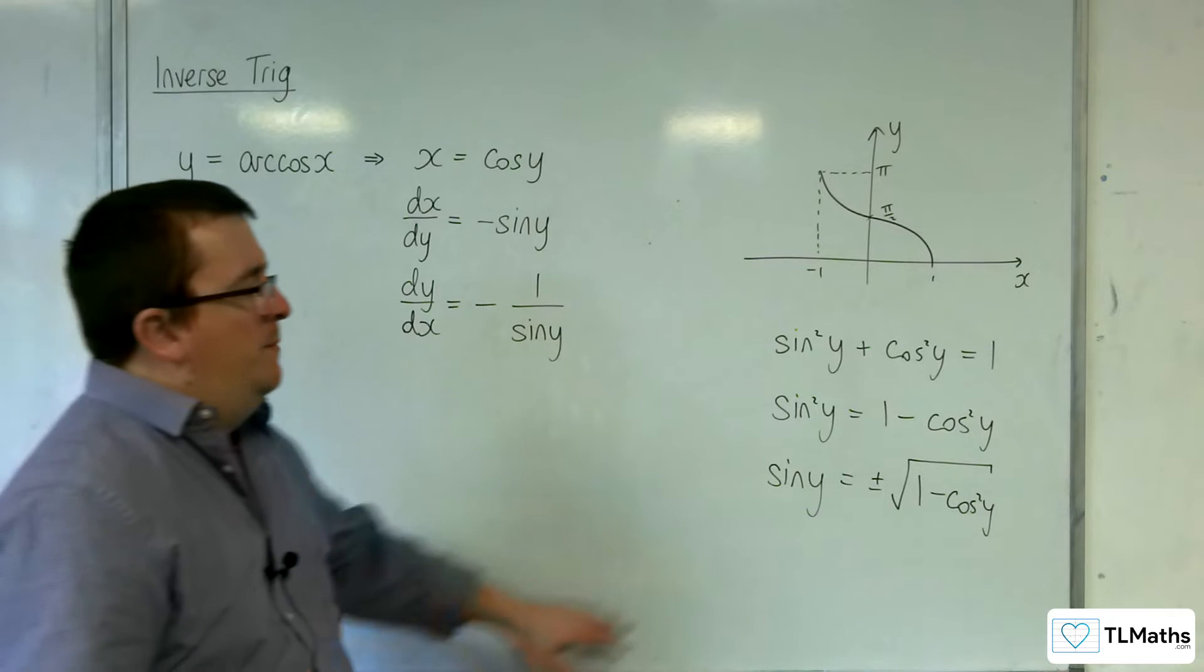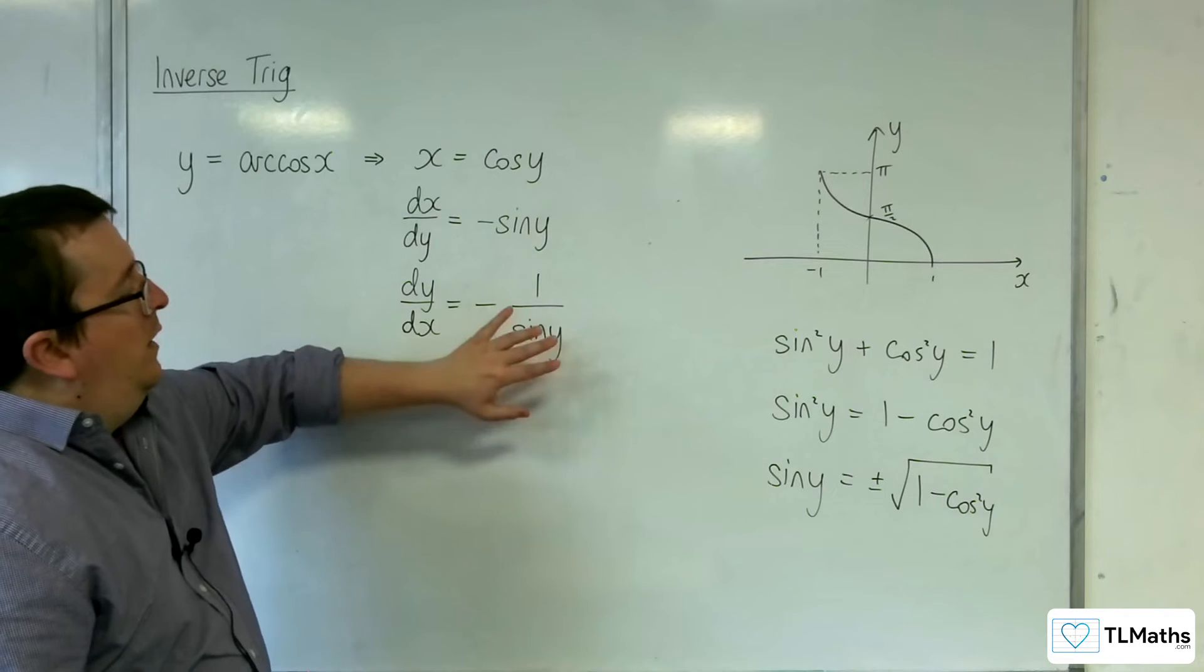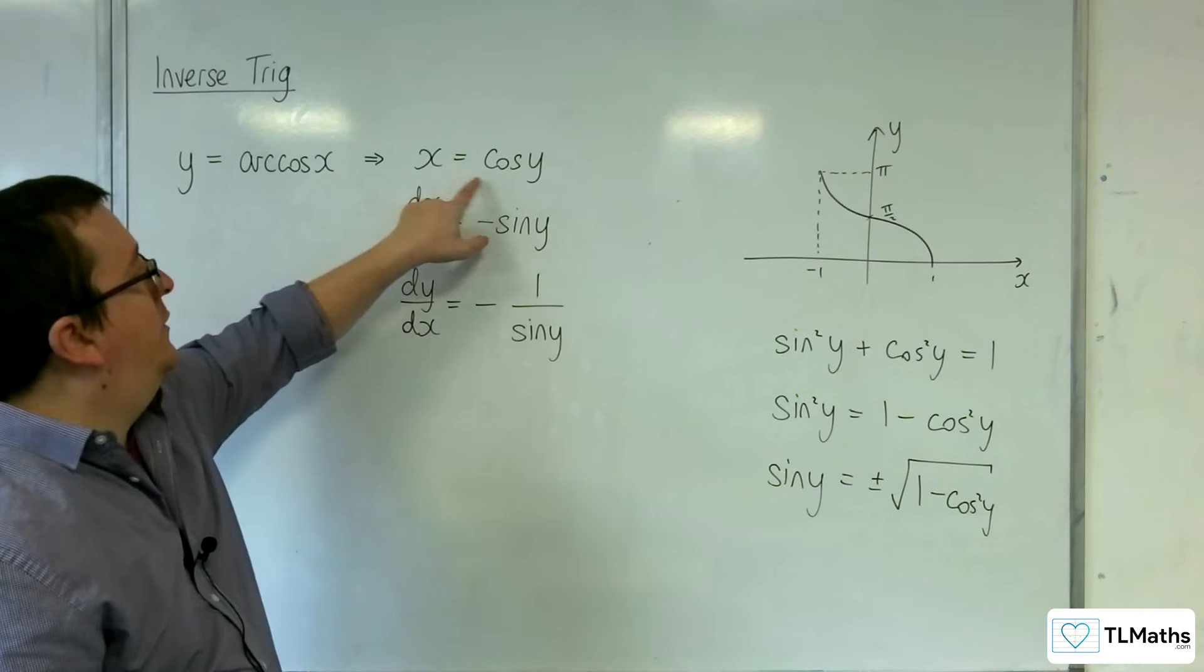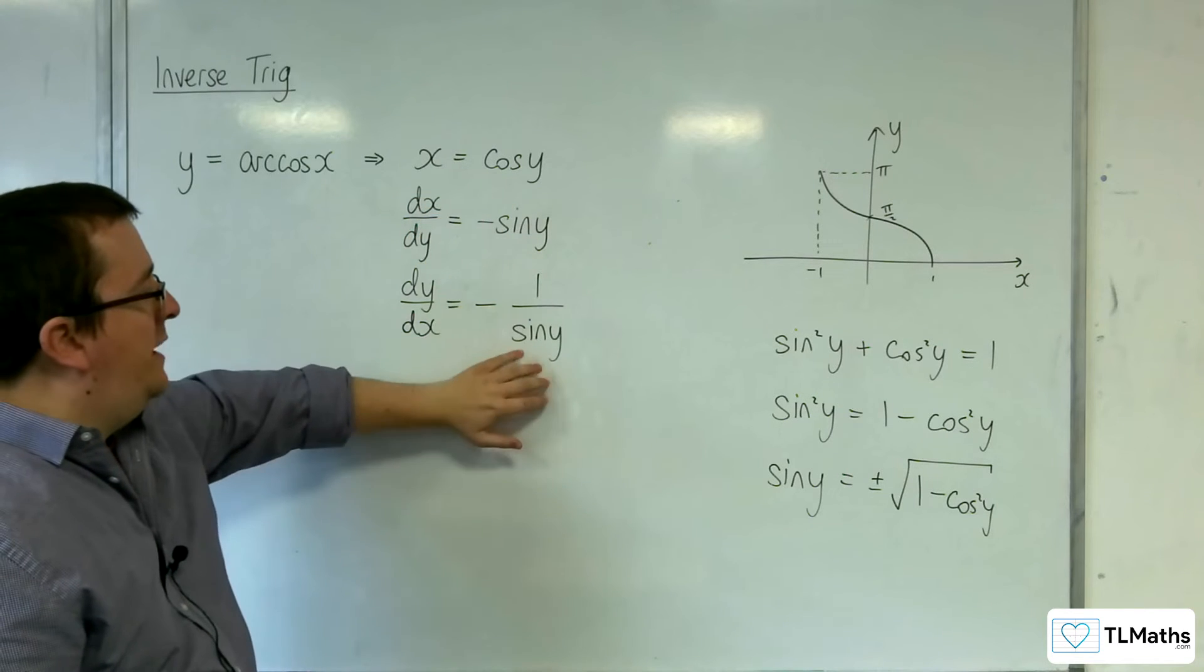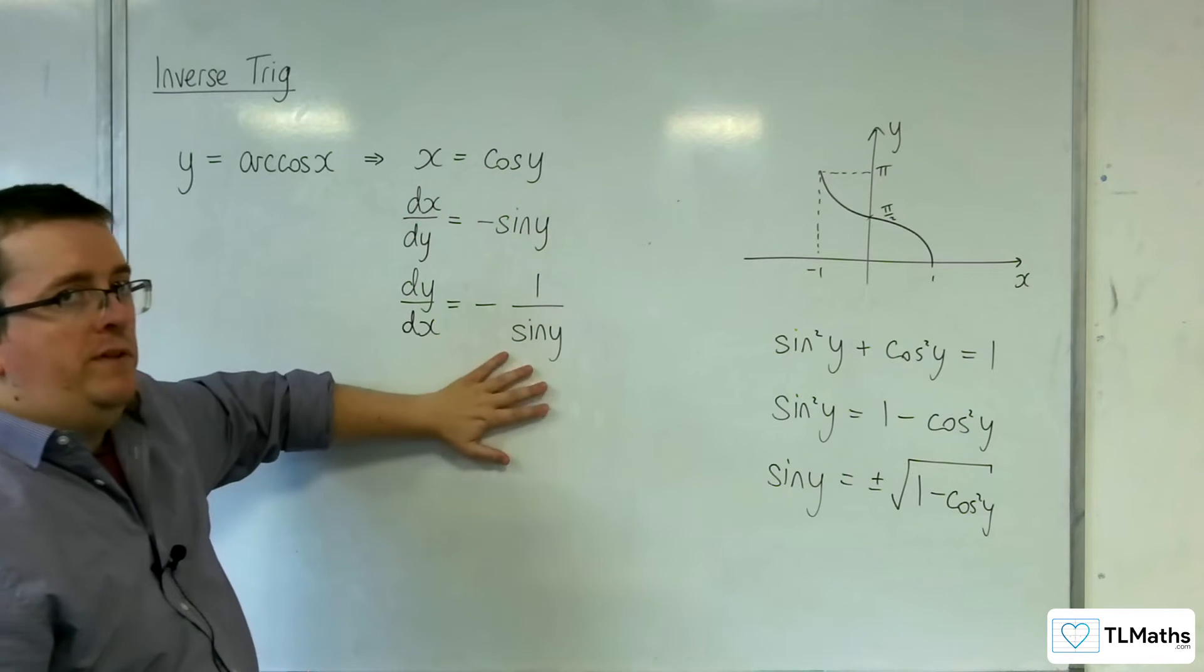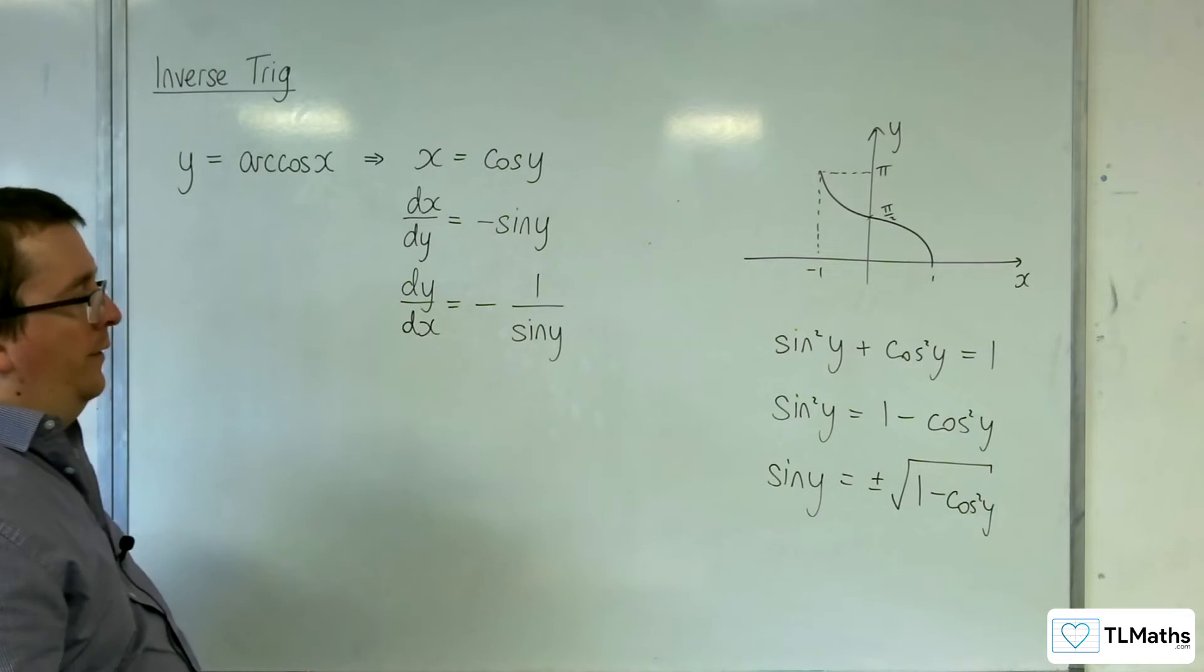Now, the whole reason for doing this, remember, is because I want to get this in terms of x. And I know that x is equal to cosine y. So if I can get this in terms of cosine, I can then make a direct swap and I can get my derivative in terms of x, which is just what I want.